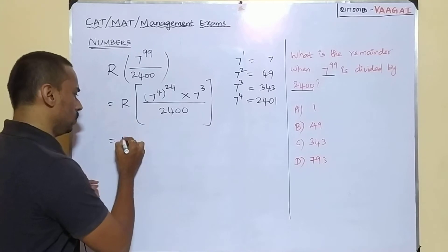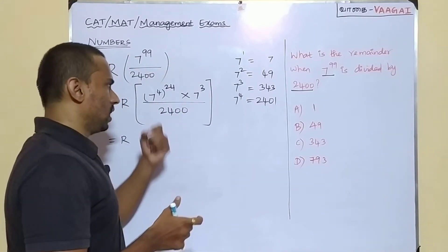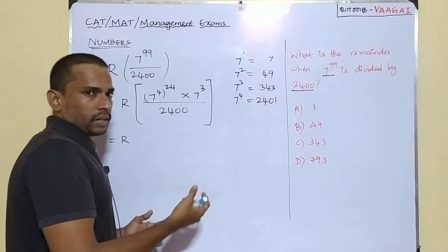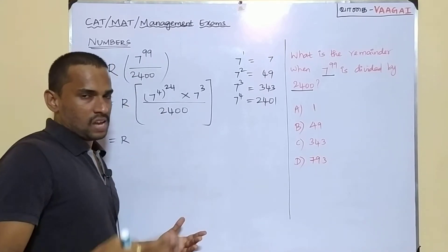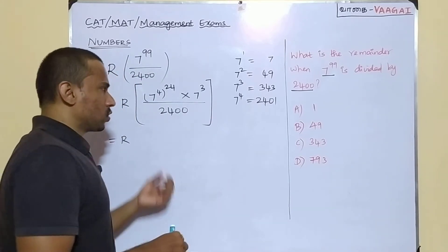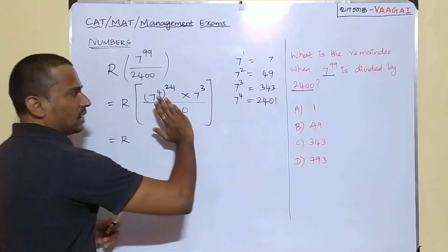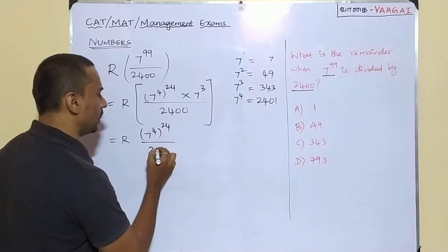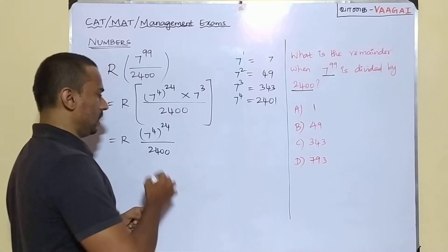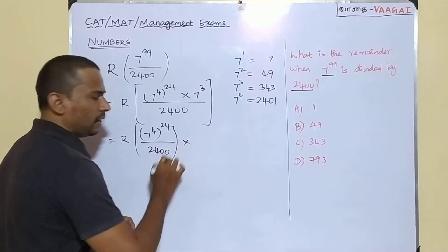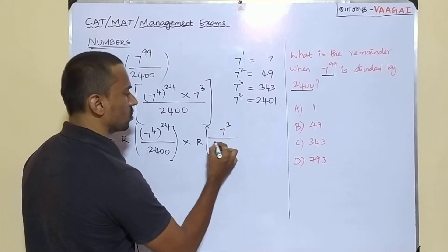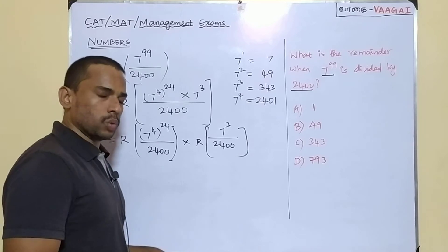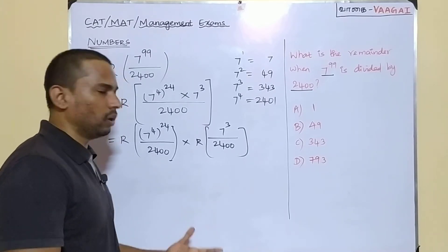What we can do next: when you have a product which is to be divided, you can separate the product, because the remainder of the product is going to be the product of the remainders — that is a strong basic property of remainders. Using that property, we break the expression: the remainder of 7 power 4 to the power 24 divided by 2400, multiplied by the remainder of 7 power 3 divided by 2400.